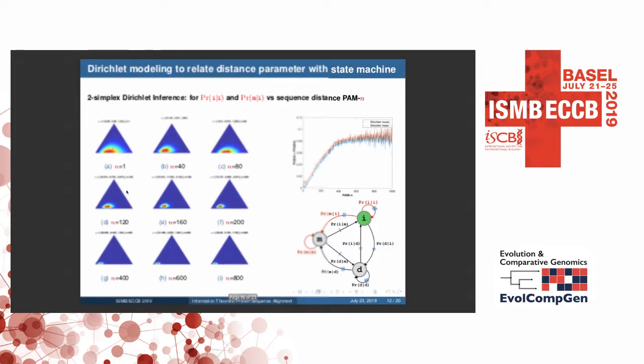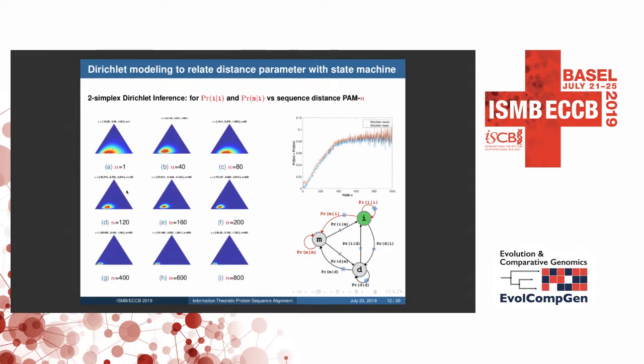So similarly, we obtained two simplex estimates as well for probability of I given I and M given I. You can see that the probability of a gap is actually linearly increasing with the evolutionary distance, and then it flattens out for the same reason as before. And these are the visualizations of the Dirichlet distributions associated.